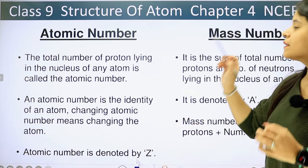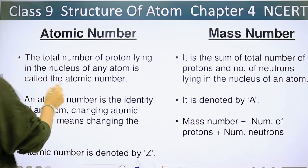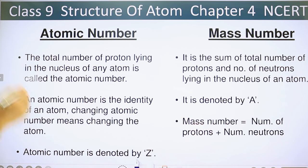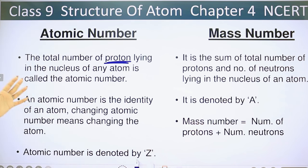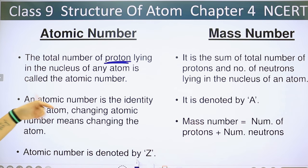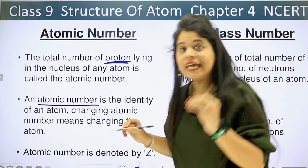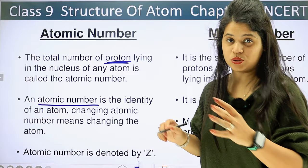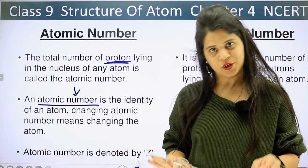So, what is atomic number? The total number of protons lying in the nucleus of any atom is called the atomic number. In one atom, the number of protons is called the atomic number. Atomic number is the identity of an atom. Changing atomic number means changing the atom. If you change atomic number, you basically change the atom.